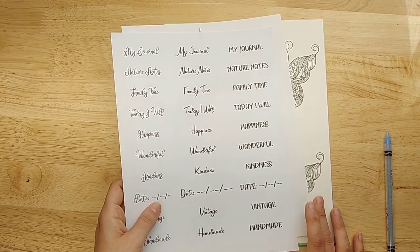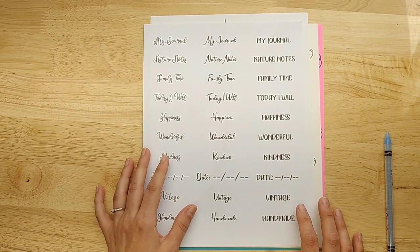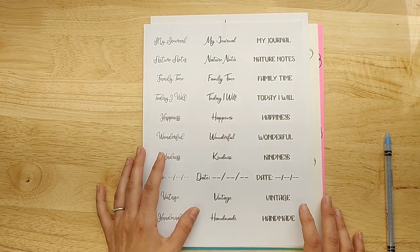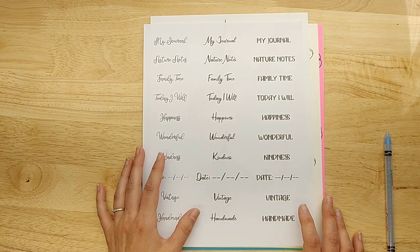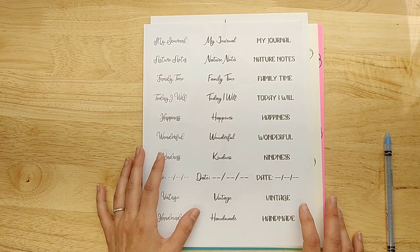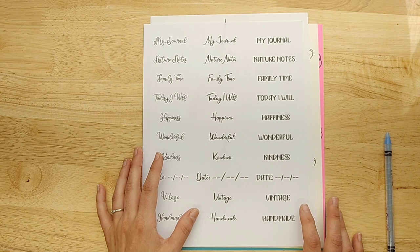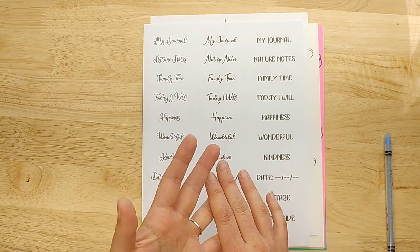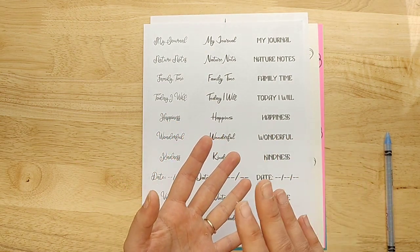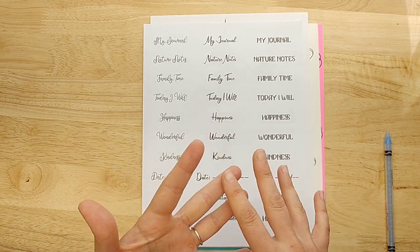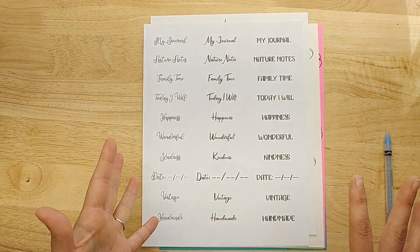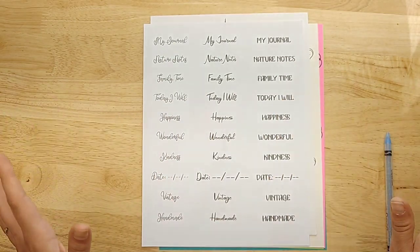So this is Creativefabrica's spectacular bundle. It's fonts and mandalas and quotes. And it's really cool. So if you're into vinyl cutting, SVG files, and you work with your Cricut, your Silhouette, and all of that, then this is a no-brainer for you.